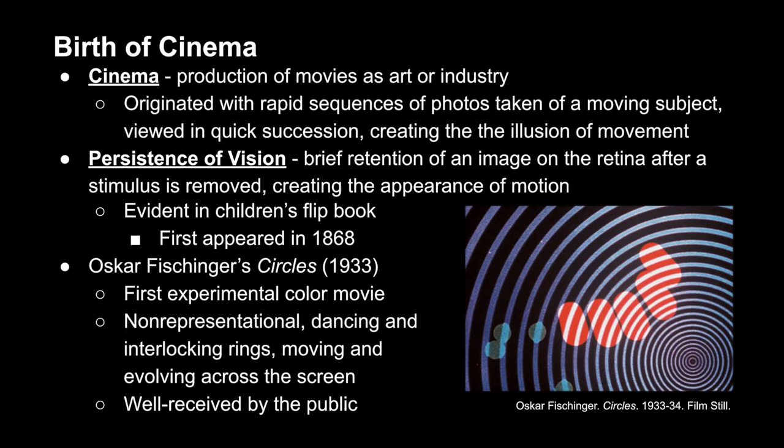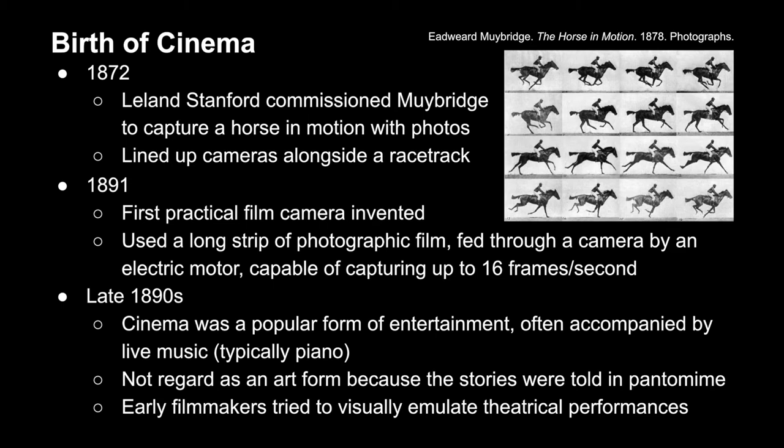Looking more specifically at when cinema and video started, we have to go back to 1872, wherein Leland Stanford, a politician, contacted Edward Muybridge to capture a horse in motion utilizing photos. Muybridge did this by placing a line of cameras along the side of a racetrack and taking photos in succession as the horse and rider came in front of each camera. These photos also settled a bet about horses in full gallop, as we can see in the second photo of the top column that there are no hooves on the ground.